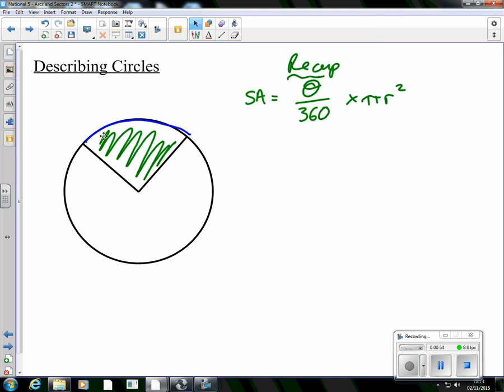What we are looking at now is not a little bit of the area, but a little bit of the circumference. That bit going around the outside isn't a bit of the area, it's a little bit of that whole way around.